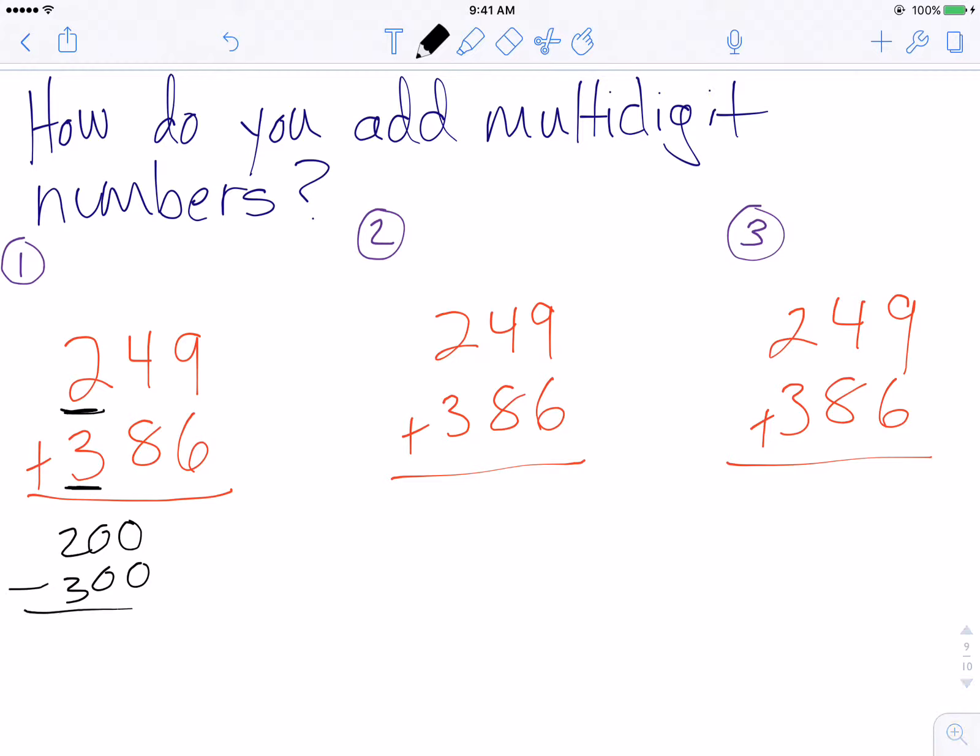So I add those together to give me 500. And then I would add my tens places, so 4 in the tens and 8 in the tens. That would be 40 plus 80, and I get 120.